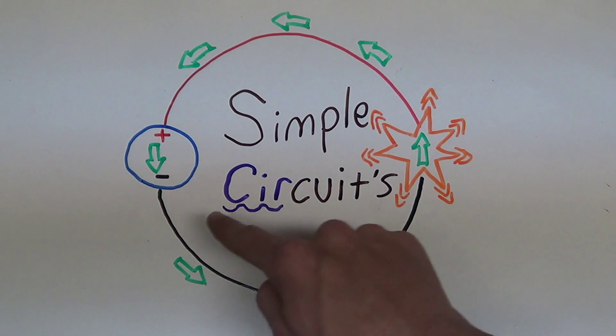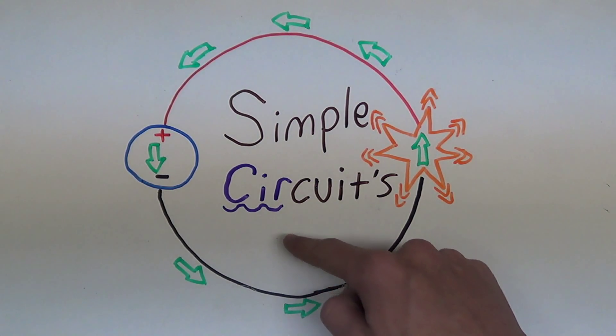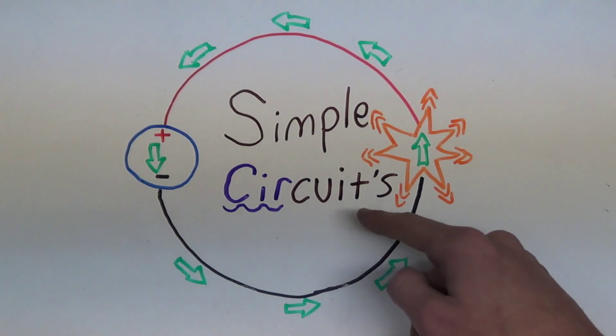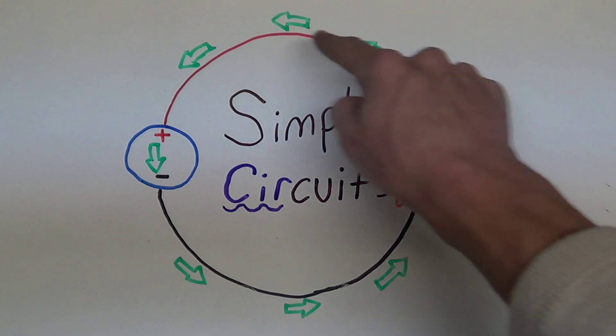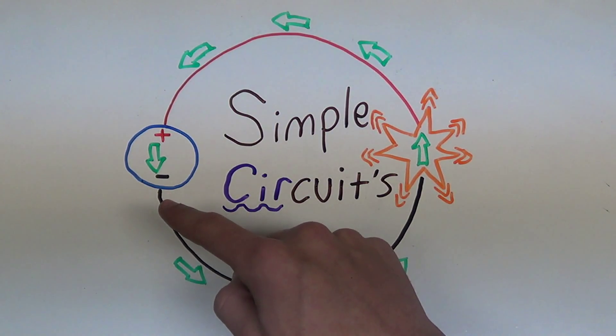Notice how the word circuit has the word circ in it, just like the word circle. You can easily remember a circuit in that way. Now notice that current is only going to flow when the circuit is complete, or in other words, when the circuit is closed.